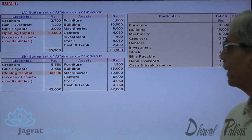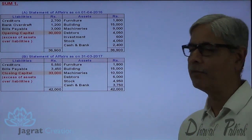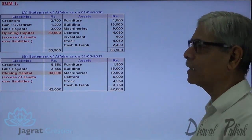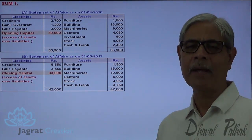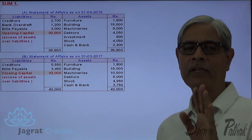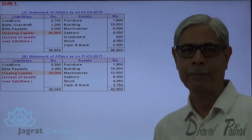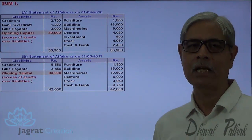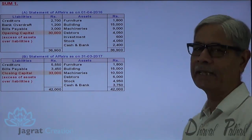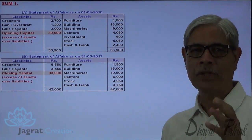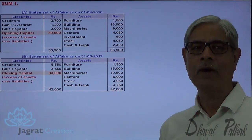Now I prepare a capital comparison statement to find out the profit. During the year, his capital has increased from 30,000 to 33,000, so 3,000 may be identified as profit — but only if there are no drawings and no additional capital. In the case where there are drawings, they are to be added to the closing capital; the additional capital and the opening capital need to be deducted to find out the profit.